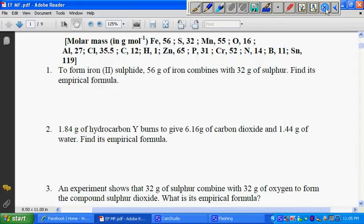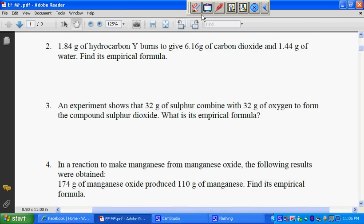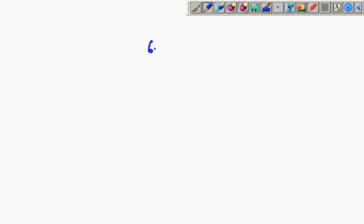Now we move on to the second question. Look carefully: 1.84 grams of hydrocarbon burns to give 6.16 grams of carbon dioxide and 1.44 grams of water. Find its empirical formula. I'll use a white board to see a clearer view. So we have 6.16g and 1.44g.